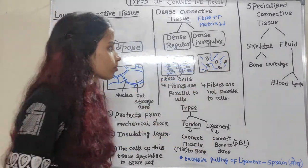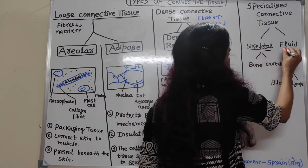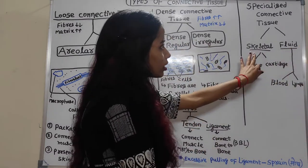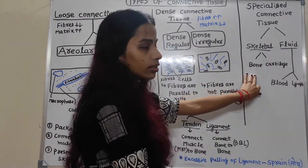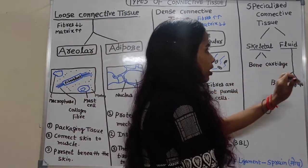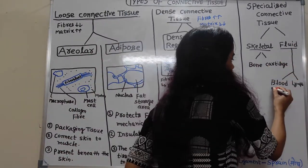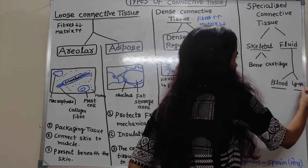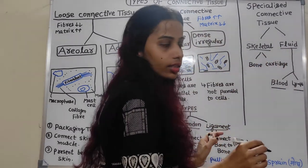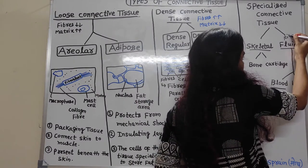Next, specialized connective tissue is divided into skeletal and fluid. Skeletal specialized connective tissue is divided into bone and cartilage, and fluid specialized connective tissue is divided into blood and lymph. In fluid connective tissue, the matrix is fiberless — fibers are absent.